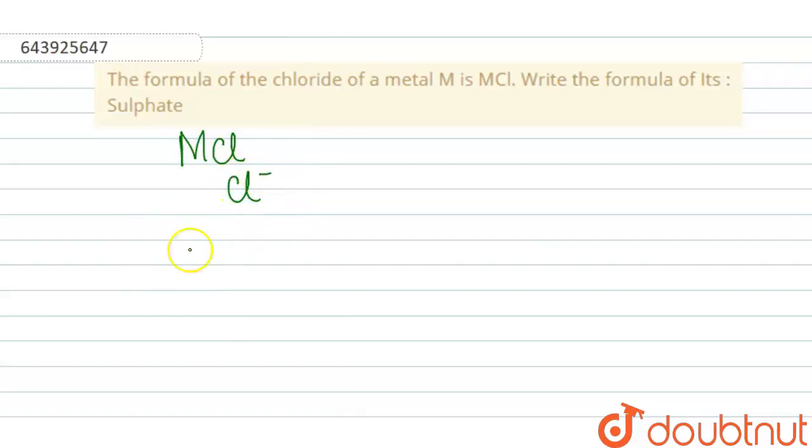Now when the formation of MCl takes place, this will come over here and this will come over here, so we get MCl. That means this metal has a valency of plus one.